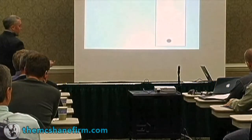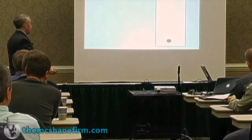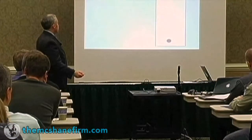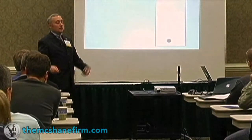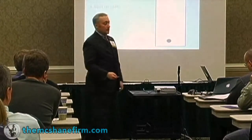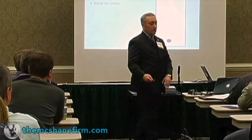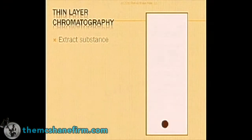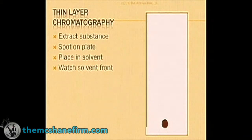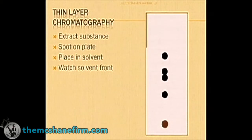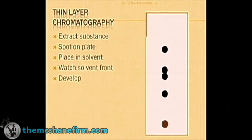Let's take a look at thin layer chromatography. I'm going to cover it very quickly because it's just something to be exposed to. The first thing you do is extract the substance — you get the substance. The next thing you do is you spot it on the plate, putting it like a spot at the bottom. Then you place it in the solvent, which is the stuff that you're going to be sucking up. After that, you watch the solvent front as it elutes upwards, causing that separation — hence the word chromatography.